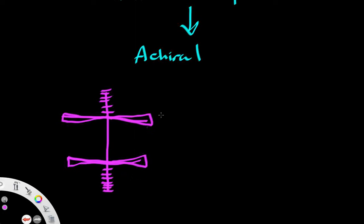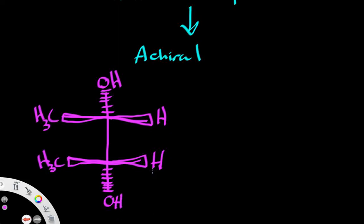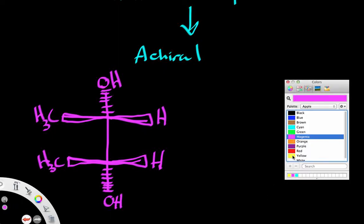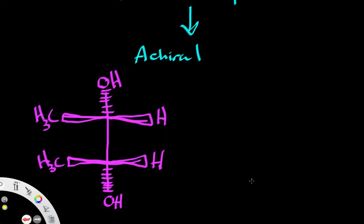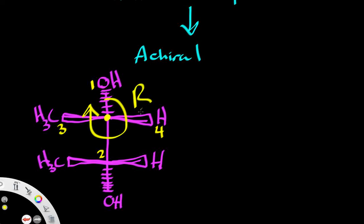We can start by adding some hydrogens, an alcohol, and some methyl groups. Now we can assign priorities — remember priorities are assigned by atomic mass, so greater atomic mass means higher priority. Starting with this carbon, we can see that we have priorities one, two, three, four, and moving in this direction we have an R configuration.